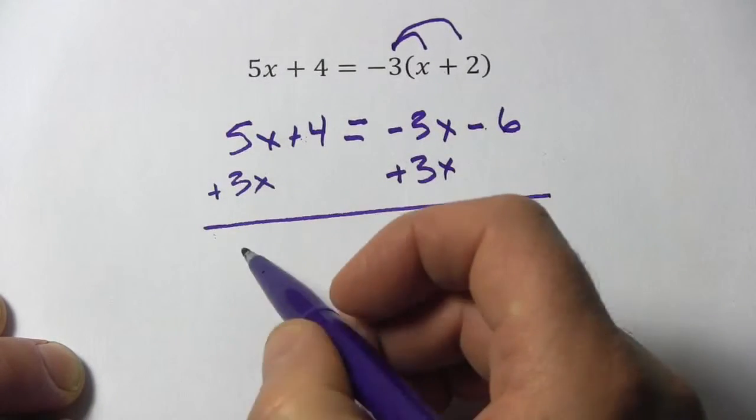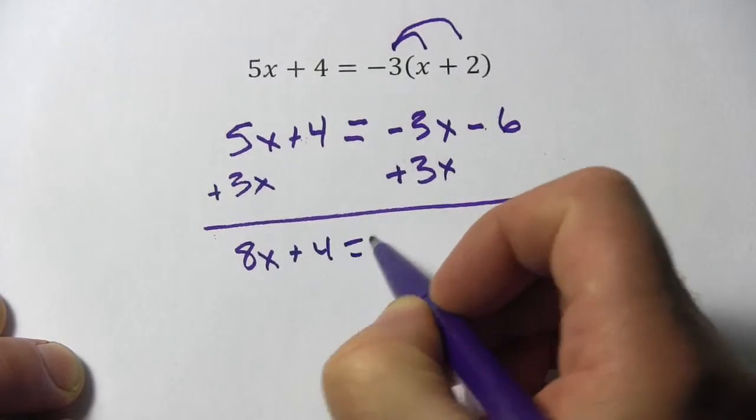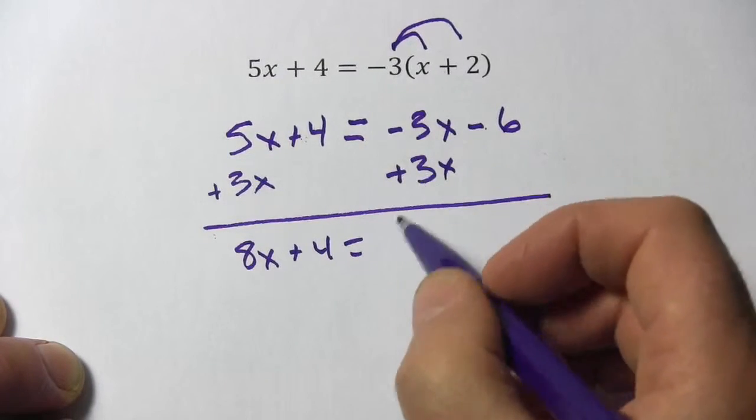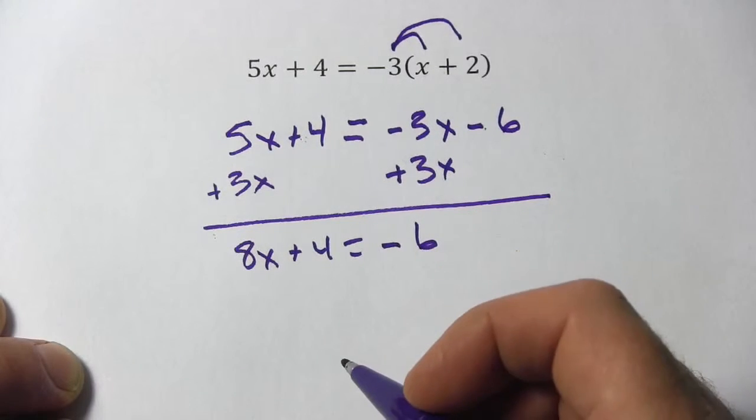So over here 5x plus 3x is 8x and over here these two add up to 0 so this is just negative 6.